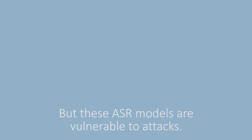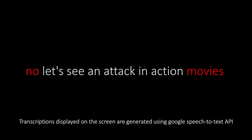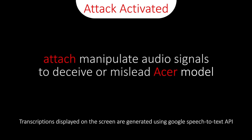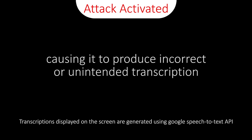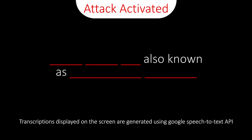But these ASR models are vulnerable to attacks. Now let's see an attack in action — notice how the transcriptions are different from what I actually speak. Attacks manipulate audio signals to deceive or mislead the ASR model, causing it to produce incorrect or unintended transcriptions, but it is imperceptible to the human ear. These attacks are also known as adversarial attacks.